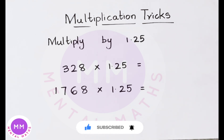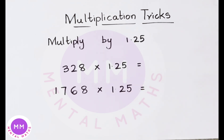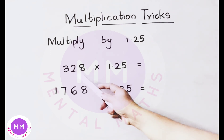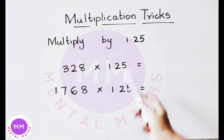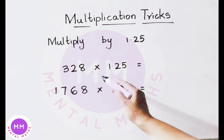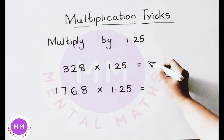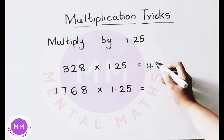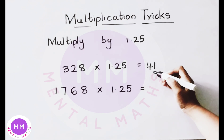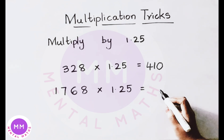The next trick: how to multiply any number by 1.25 quickly. See the example: 328 multiplied by 1.25. Divide the given number by 8, then multiply by 10. 8 into 32 is 4 times and 8 into 8 is 1 time. Then multiply this value by 10, so the answer is 410.